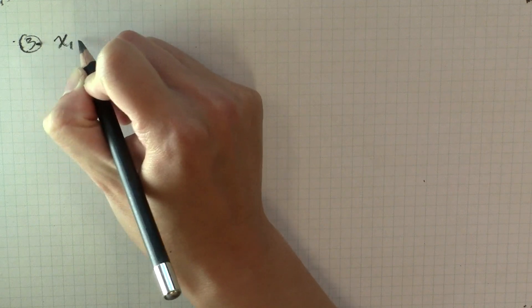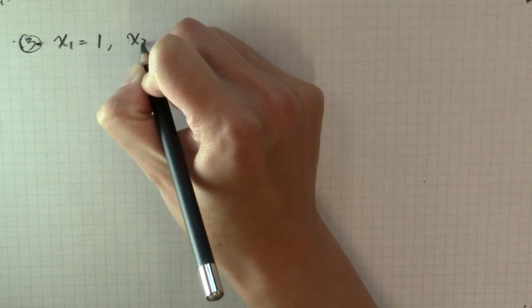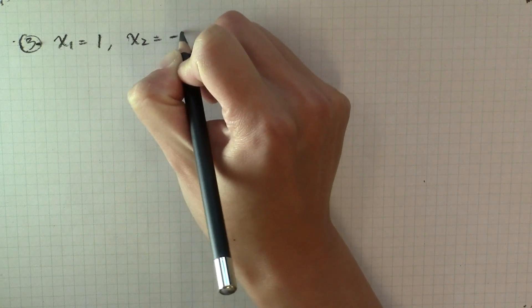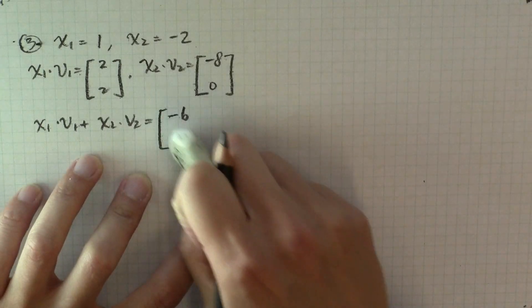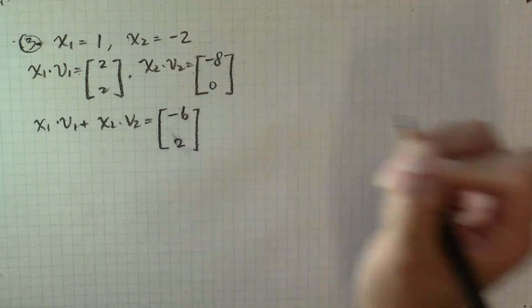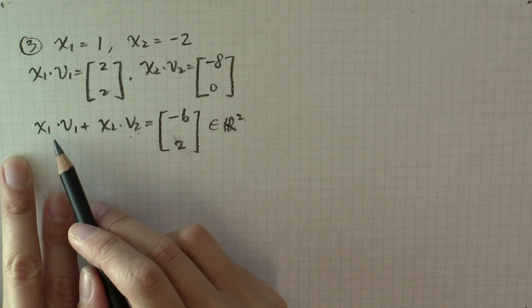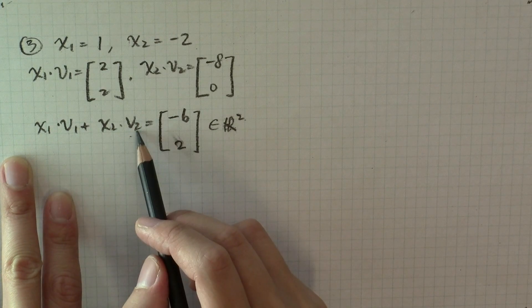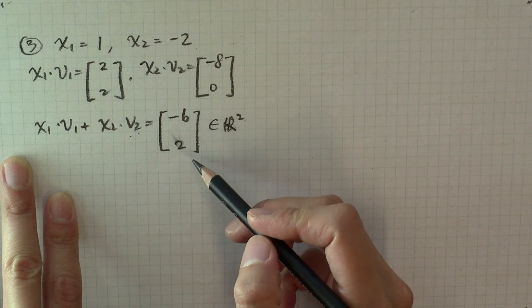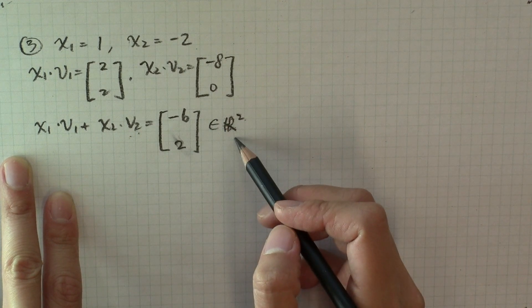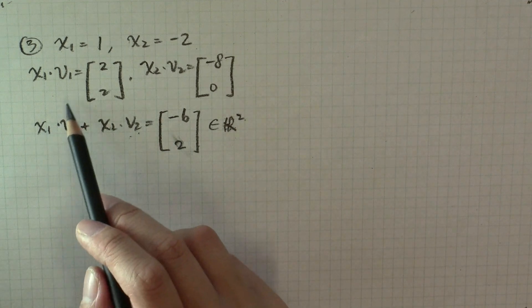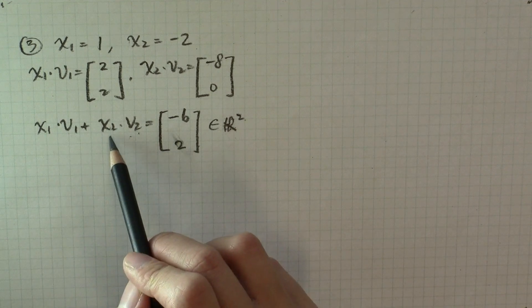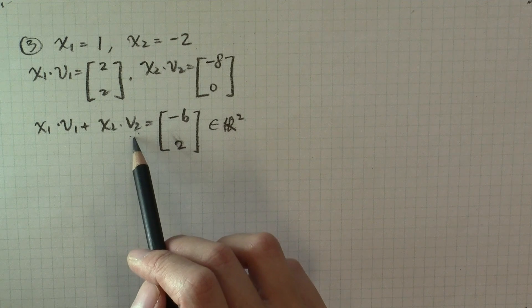We can continue with different choices. For example, if x1 is equal to 1 but x2 is negative 2, the corresponding linear combination would be (-6, 2). So by forming different linear combinations of v1 and v2, we get several different vectors in R2, and we can keep getting more by taking different coefficients x1, x2.